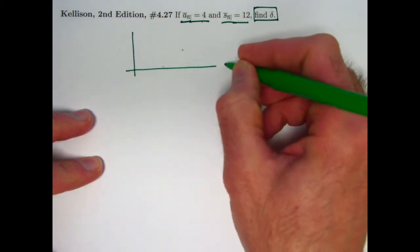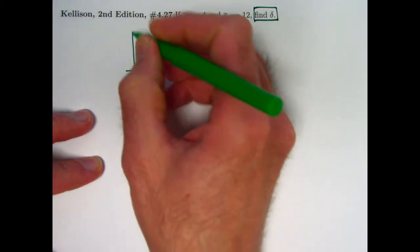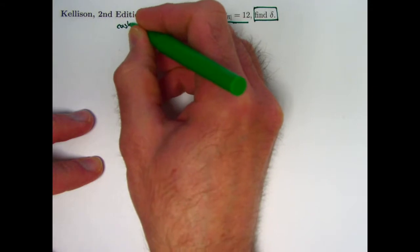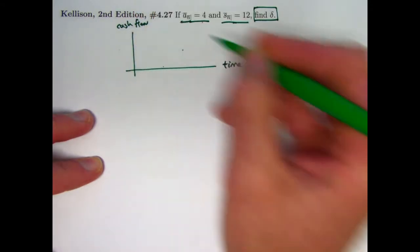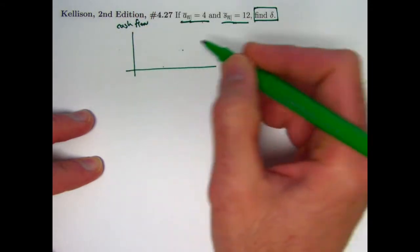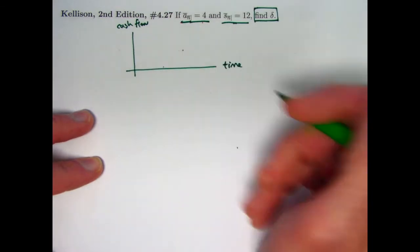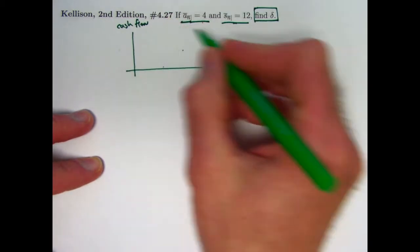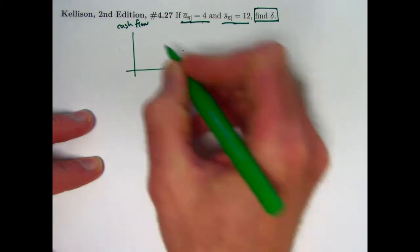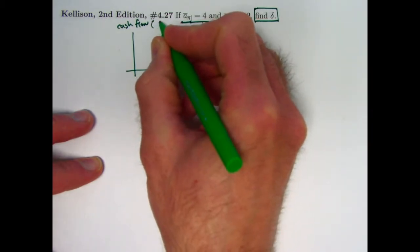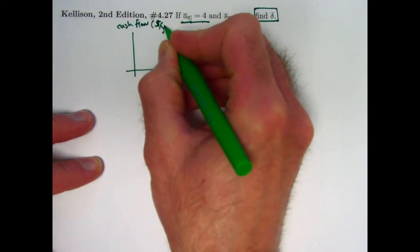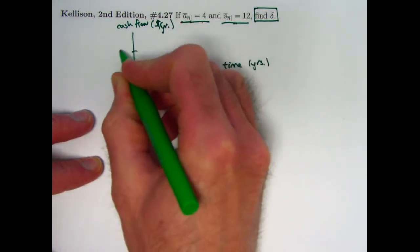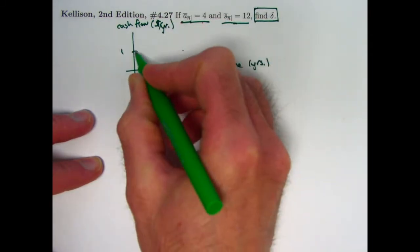Alright, so what's going on here? I talked about this in the last video. We've got the time axis here, and we've got the cash flow axis up here. The assumption with these symbols is the cash flow is in one unit of money per unit of time. Again, I'll take time to be years to be specific, though I don't have to, and I'll take cash flow to be, say, dollars per year to be something specific.